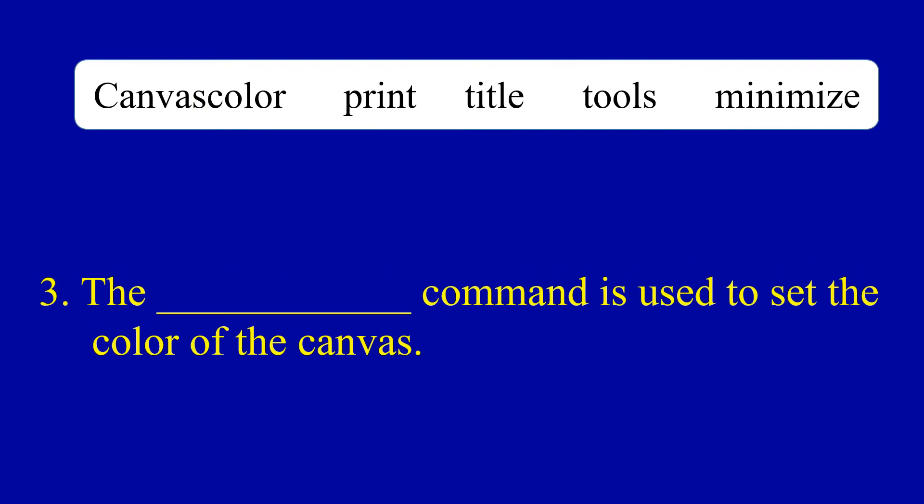Question number 3. The blank command is used to set the color of the canvas. Answer is canvas color. The canvas color command is used to set the color of the canvas.